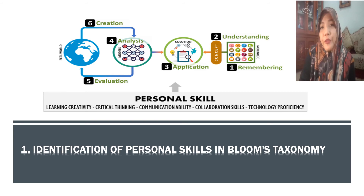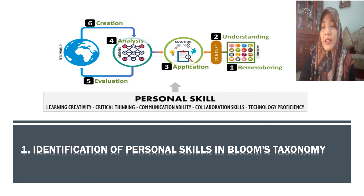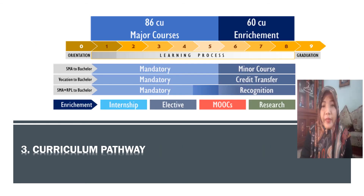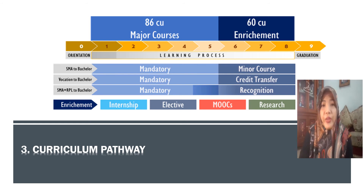We use six steps for the taxonomy: remembering, understanding, application, analysis, evaluation, and creation — these are the levels of Bloom's taxonomy. Personal skills will be mapped, and based on identification, they will be mapped to levels in Bloom's taxonomy. Then those levels in Bloom's taxonomy will also be mapped to knowledge domains, including major enrichment and ITG.